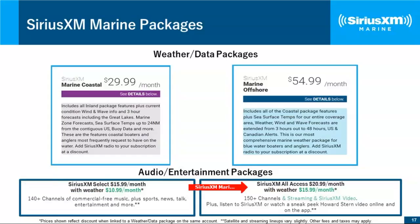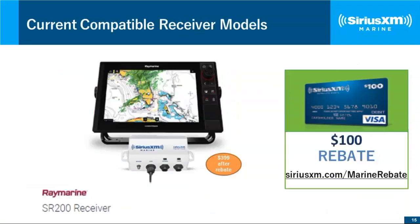The SR200 is being made available on the Axiom series only. If you already have an SR150 or previous Raymarine receiver model, you do not need to upgrade unless you so desire. The SR200 will eventually come out with new features — stay tuned for late summer/early fall for some new features specific to the SR200. Previous receiver models will still work with your Raymarine plotters.